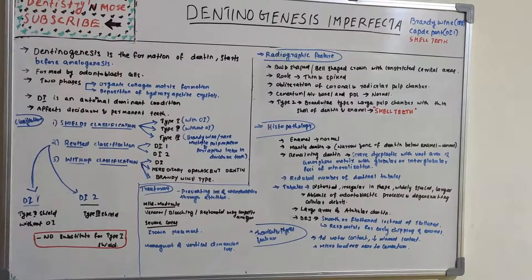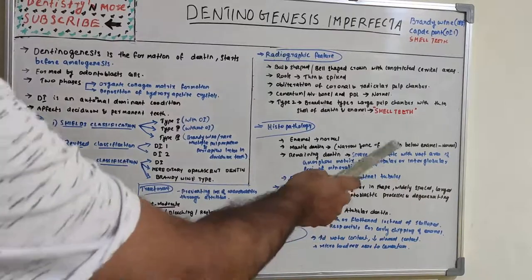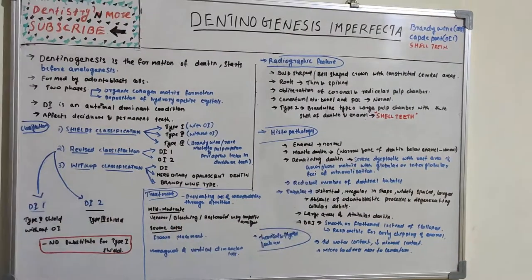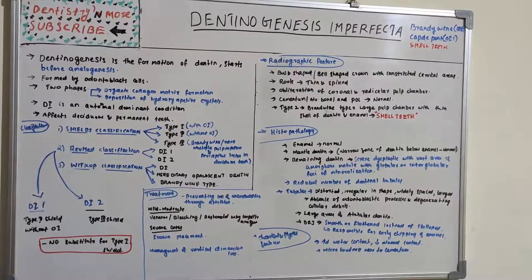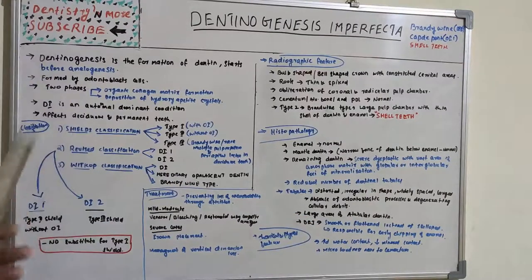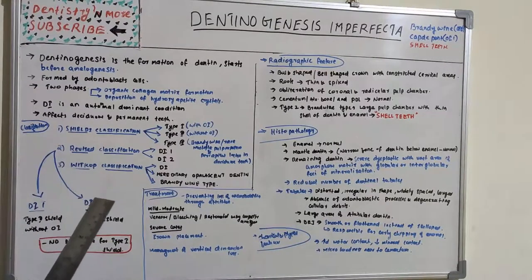In histopathology, the enamel is normal. The mantle dentin — the narrow zone of dentin below enamel — is also normal. The remaining dentin is severely dysplastic with vast areas of amorphous matrix and globular or interglobular foci of mineralization. There is a reduced number of dentinal tubules; the tubules are distorted, irregular in shape, widely spaced, and larger in size. There is absence of odontoblastic processes and degenerating cellular debris.